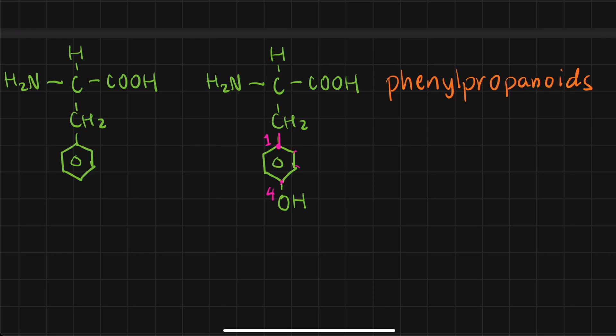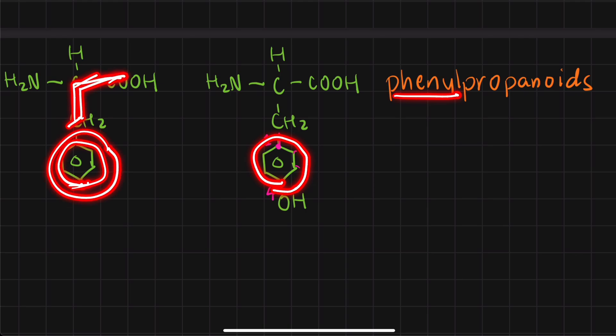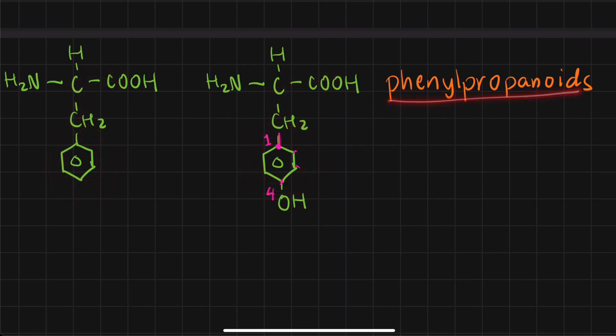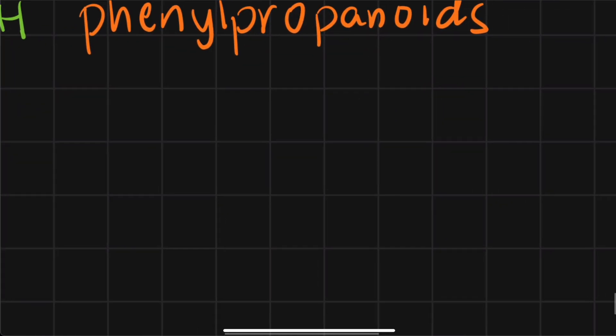And we call them like that because of their structure. These two have the phenyl group and if you look at the carbon chain above them, how many carbons do we have? One, two, three. Propane. So, phenylpropane. Phenylpropane. So, those are the phenylpropanoids, whatever will be coming out from them. So, what are those things, those phenylpropanoids that can come out from either phenylalanine or tyrosine?